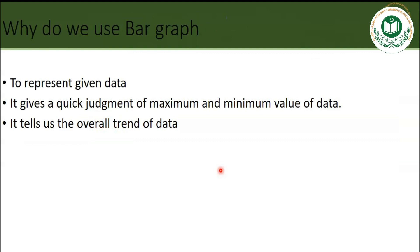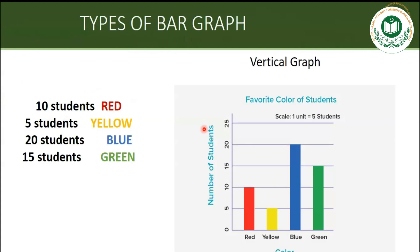Can you give me some examples of why we use bar graphs? Think outside the box — why have we plotted this bar graph? It is used to represent given data, to give a quick judgment of maximum and minimum values, and it also tells us the overall trend of the data. By looking at this bar graph, you can instantly tell that the most favorite color in the class is blue, because it has the largest bar, and the least favorite is yellow.